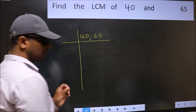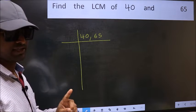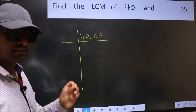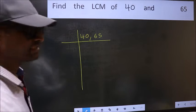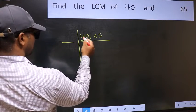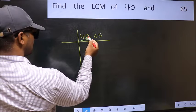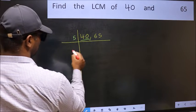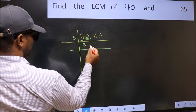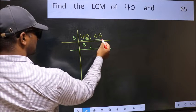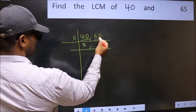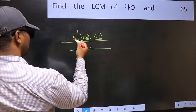This is your step 1. Now you should focus on the first number, which is 40. The last digit is 0, so we take 5. When do we get 40 in the 5 times table? 5 times 8 is 40. The other number is 65. Last digit is 5, so this number is also divisible by 5.